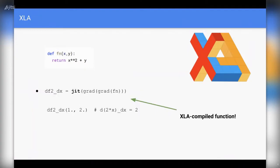Coming back to our previous function fn, which is defined as x squared plus 5. We take the second derivative we computed — grad of grad of fn — and call the JIT method on it. This is the jitted version of grad of grad of fn, which is the XLA compiled function. Internally, JAX's XLA bridge performs some optimizations, converting it to another intermediate representation that makes things run faster on whatever device you are using.